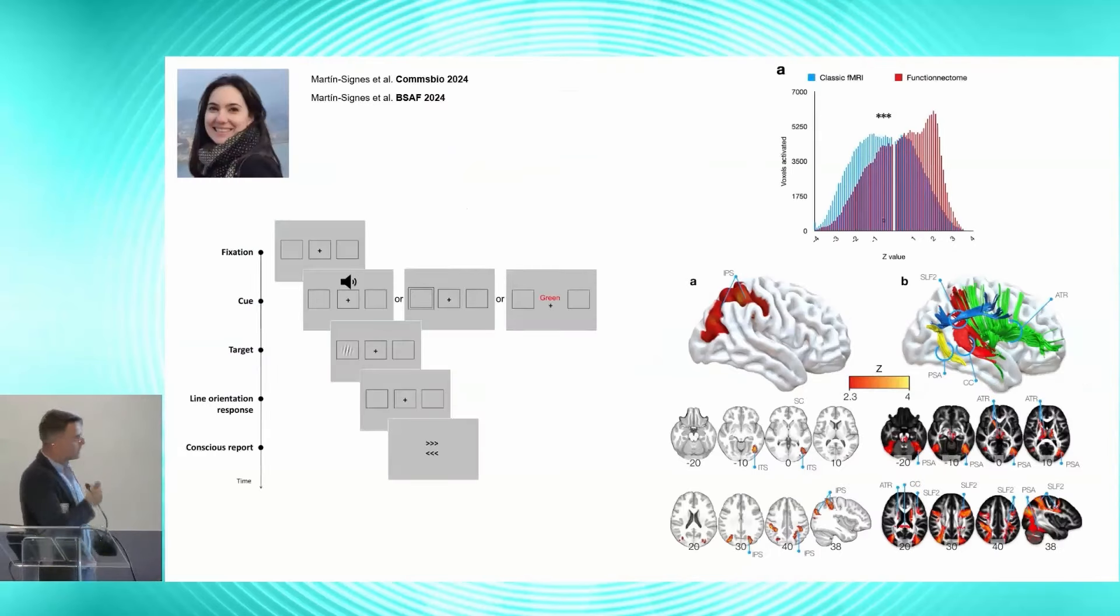So this is an example of the application of this method to visual consciousness. So we use a paradigm where you manipulate attention three different ways and you have to detect targets that are barely visible. So sometimes you see it, sometimes you don't see it. And that will allow you to measure visual consciousness by contrasting when you saw it versus when you didn't see it independently of attention because you manipulate it in different way. If you do this contrast with classical analysis, you obtain very good activation of the anterior part of the occipital and the intraparietal sulcus. Probably the main area of visual consciousness, according to functional MRI.